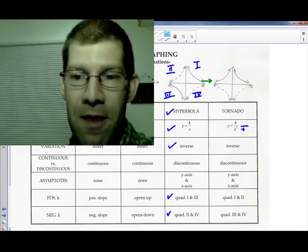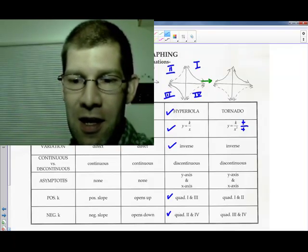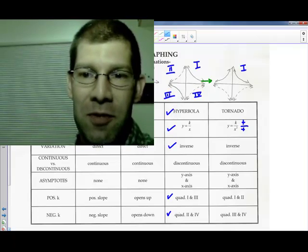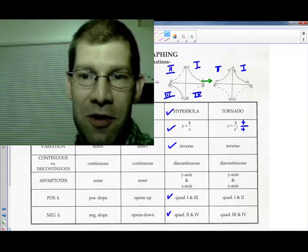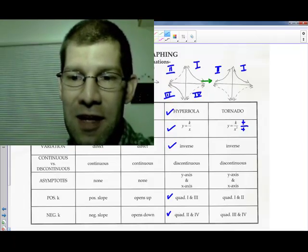The numerator, then, is kind of what makes the difference. If you have a positive k, like I have here in this line, it'll be in quadrants 1 and 2, and the reason is, positive number divided by a positive number, it's always positive. So your y value is always going to be positive if you have a positive k.